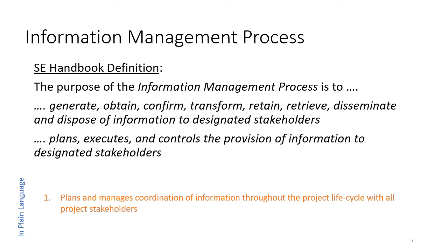The definition of the information management process according to the System Engineering Handbook is to generate, obtain, confirm, transform, retain, retrieve, disseminate, and dispose of information to designated stakeholders. The process plans, executes, and controls the provision of information to designated stakeholders. In plain language, within a development process, a tremendous amount of information must be communicated, and the information management plan manages the coordination of that information throughout the project lifecycle with all project stakeholders.